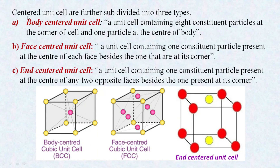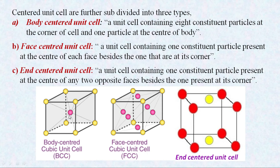The sub-classification of centered unit cell is entirely depending on which places the particles will be present along with corner particles. The first one is the body-centered unit cell. As we can see in this diagram, the particles are present at the corners of the unit cell along with one particle at the center of the unit cell.